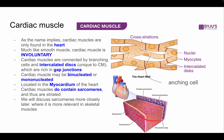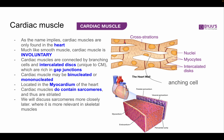Cardiac muscles do contain sarcomeres, and thus they are lightly striated — though not as much as skeletal muscles. We'll discuss sarcomeres more closely in the skeletal muscle section. The intercalated disc is very prominent and in a real, more detailed cell would appear zigzagged.